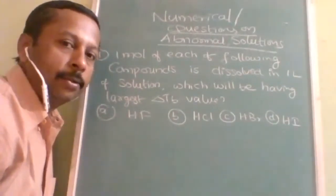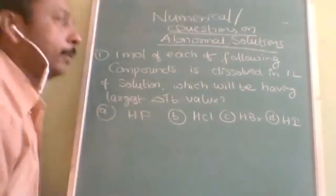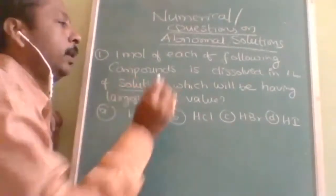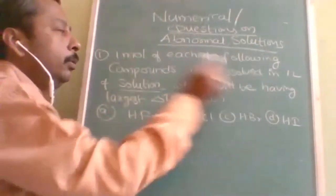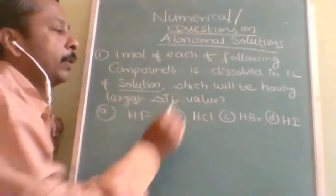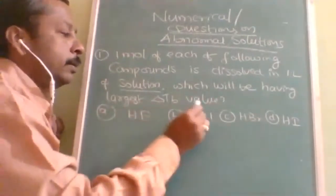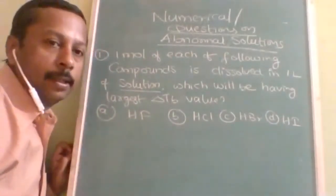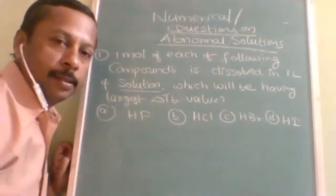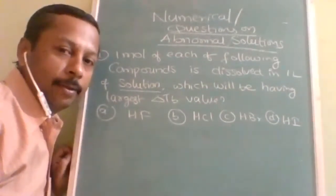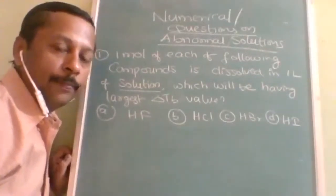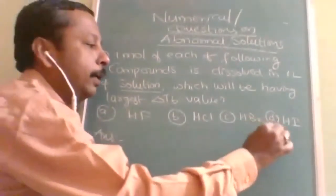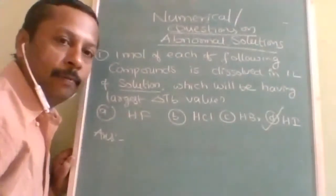Theory has already been thoroughly revised in the video lecture. Let us start the question session. Question: one mole each of the following compounds is dissolved in one liter of solution — solute moles are the same. Which will have the largest ΔTb? All of them are halogen hydro acids. Try to guess and think which concept to apply.